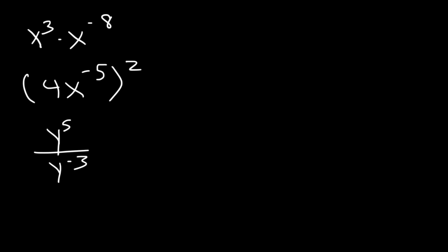Let's start with the first one. We need to add the exponents since we're multiplying the same base. 3 plus negative 8 is negative 5. Now, to get rid of the negative exponent, let's move x to the bottom. So this is 1 over x to the positive 5.